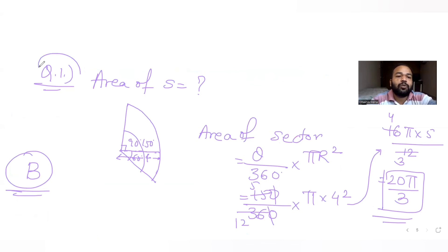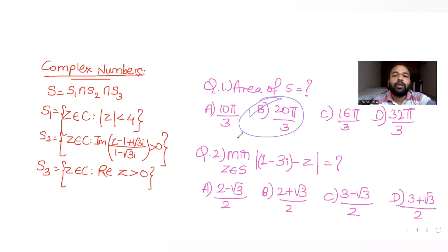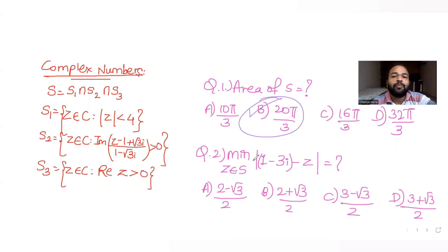I hope you have understood how to solve this type of question. We identified from S1, S2, and S3 their geometric meanings — a circle and two lines — found the common region, and computed its area as a sector. I'll meet you tomorrow with the second part of the question where we find the minimum distance of the point (1, −3) from the complex number z in the shaded region. Till then, like, share, and subscribe to the channel. Thank you.